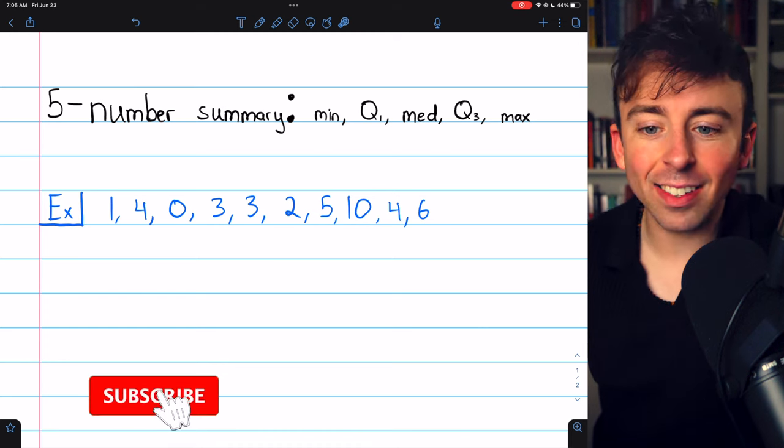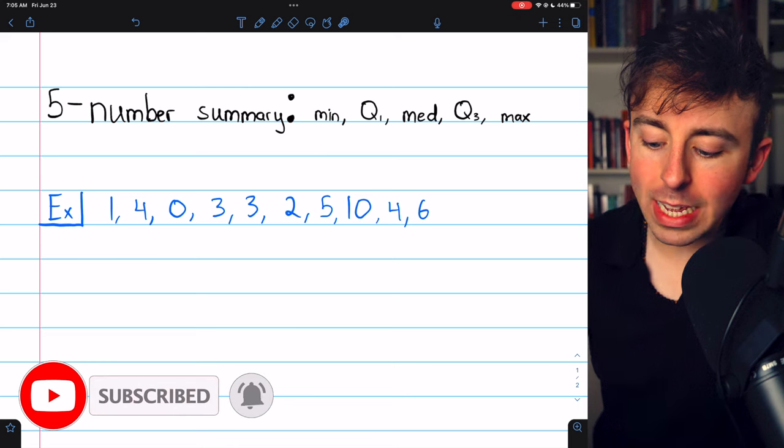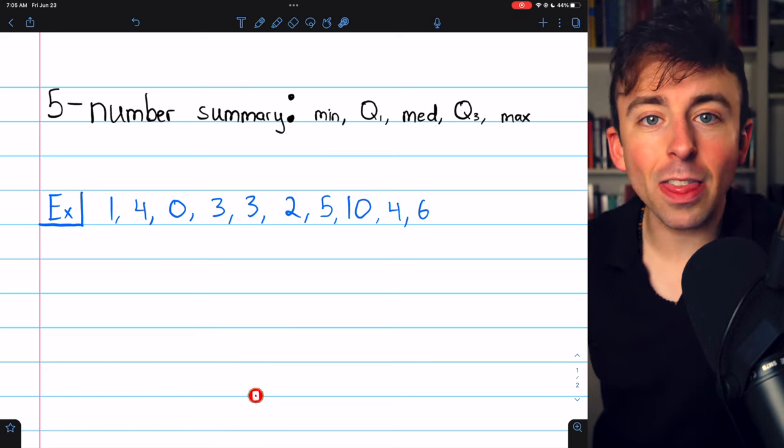The five-number summary of a data set consists of the minimum, the first quartile, the median, the third quartile, and the maximum.